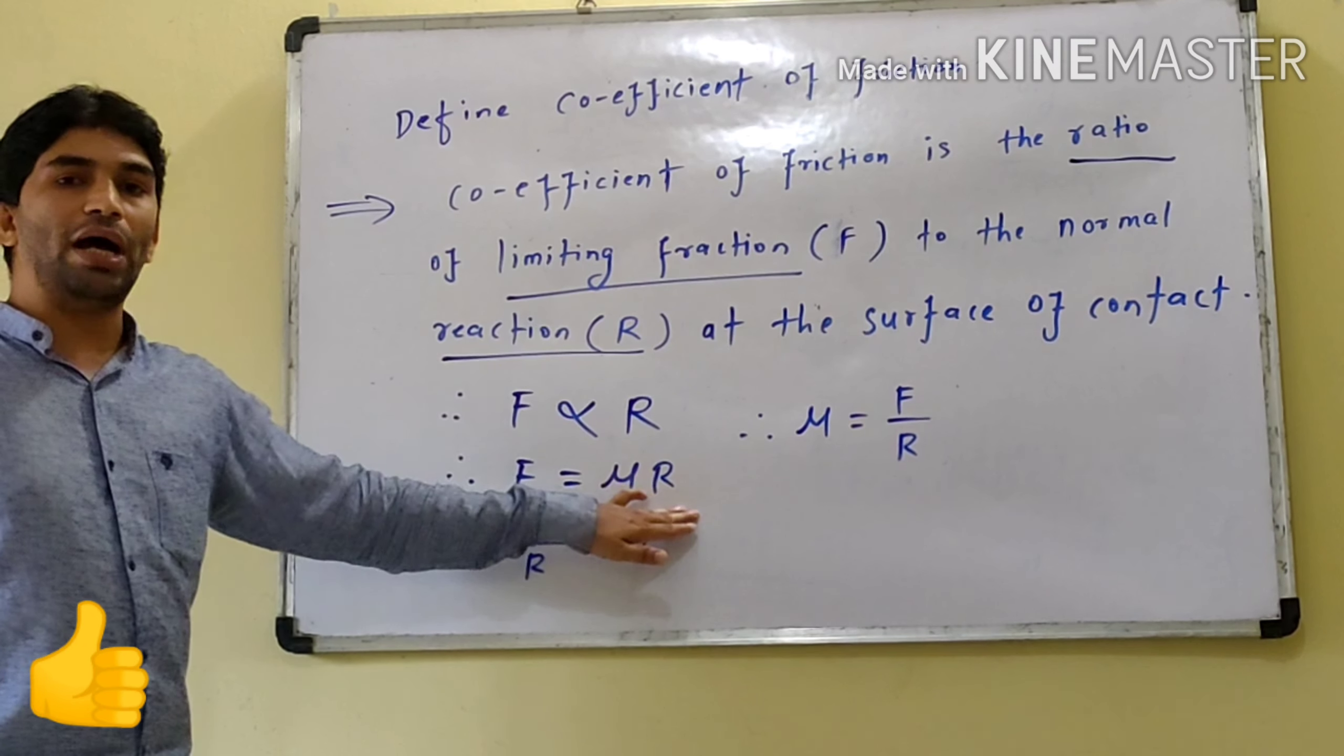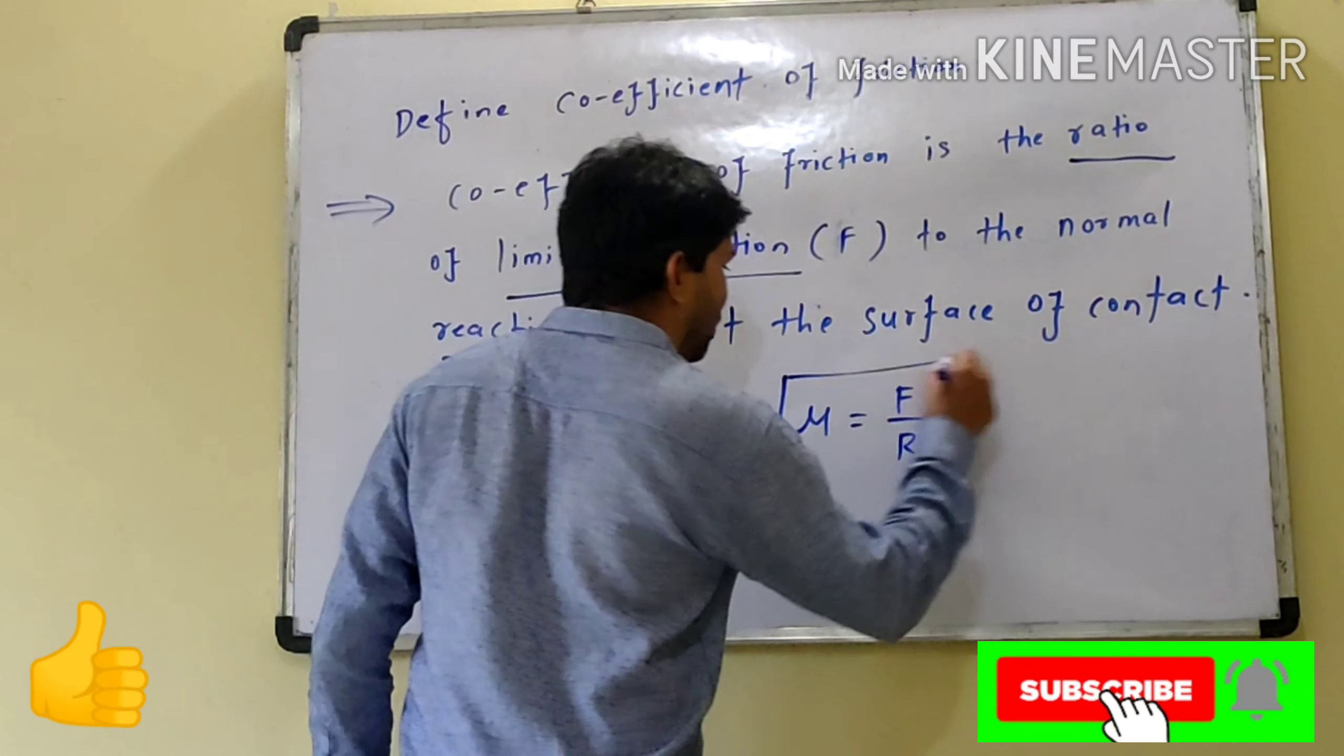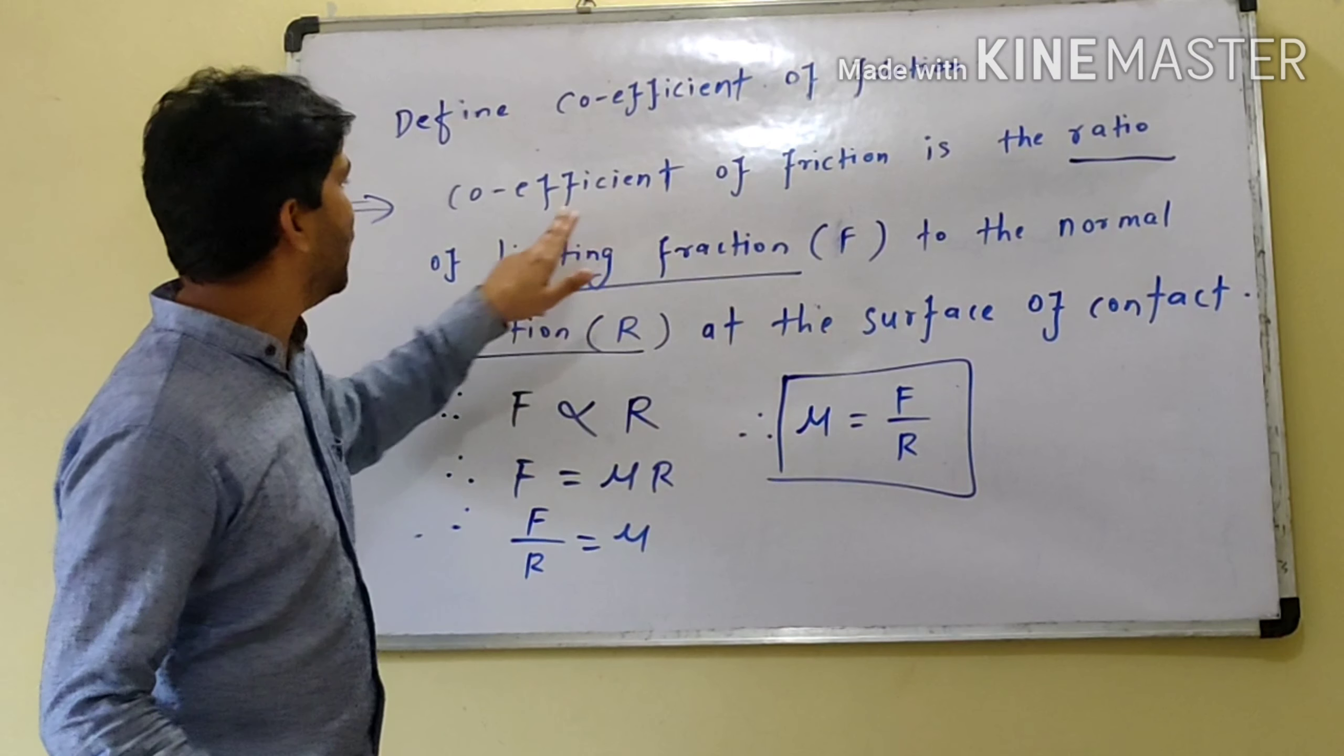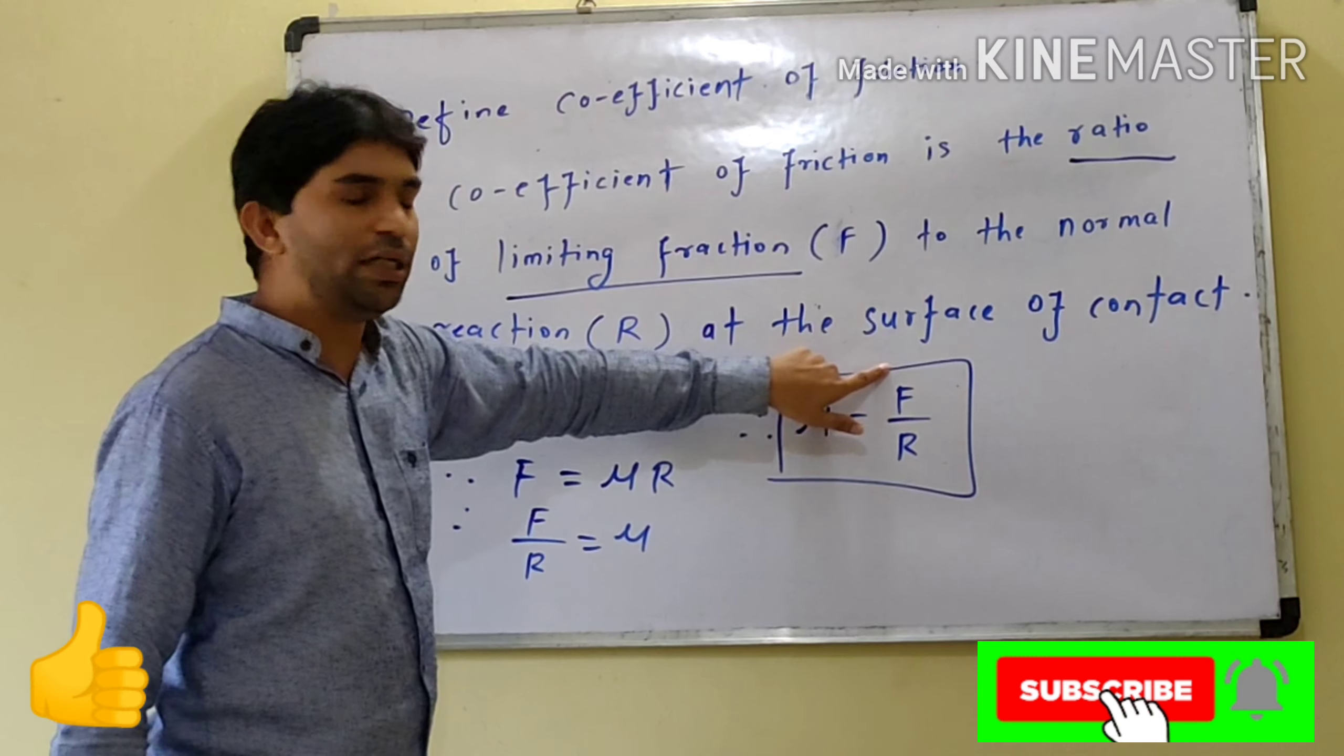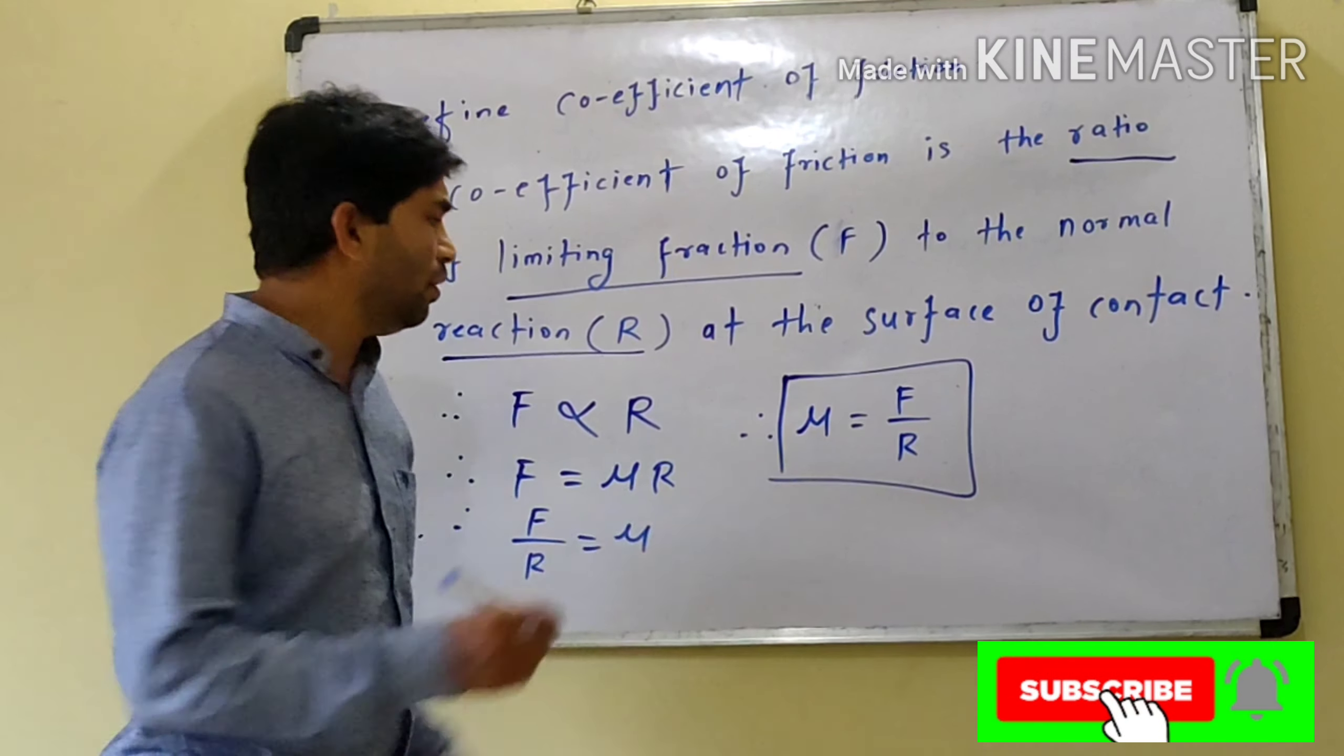This is the coefficient of friction. The ratio of limiting friction to normal reaction. This is the coefficient of friction, denoted by μ.